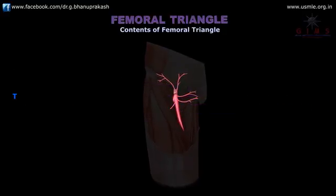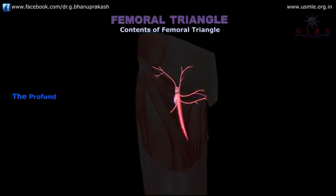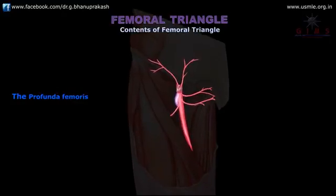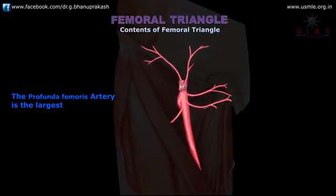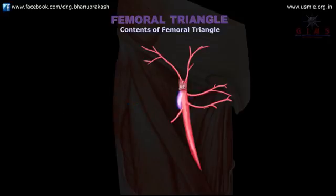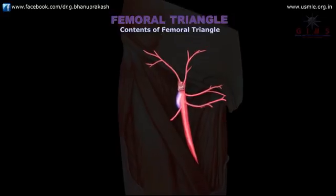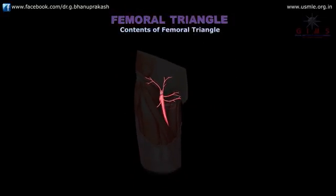The profunda femoris artery is the largest branch of the femoral artery, and it in turn gives rise to two arteries within the femoral triangle itself — the medial and lateral circumflex femoral arteries.